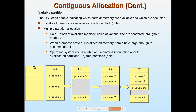Whenever a new process arrives and demands memory space, the operating system checks its table — a pool of memory information — to see whether a particular space is free and whether it is large enough for the incoming process. If it is enough, it allocates that memory. If the process requires more than available, it cannot be allocated — that is the disadvantage of fixed partition.